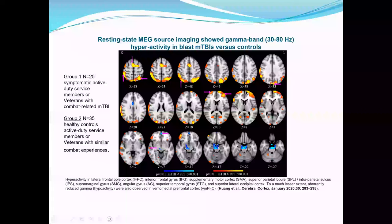We see increased gamma activity in the frontal pole area, the inferior frontal gyri, the supplementary motor area, and multiple regions in the parietal lobe including the superior parietal lobe, supramarginal gyri, angular gyri, and occipital cortex — showing very pronounced high-frequency gamma noise in TBI compared with controls. One region, the ventral lateral prefrontal cortex, shows the opposite direction.